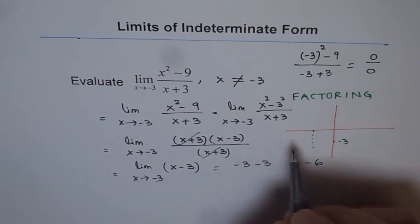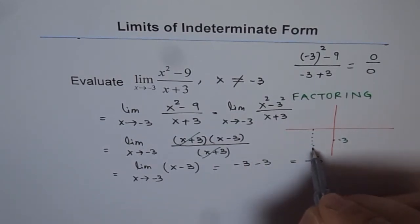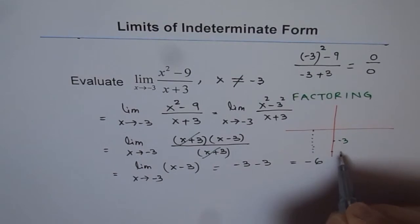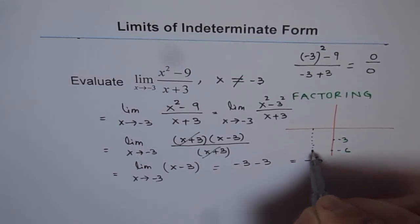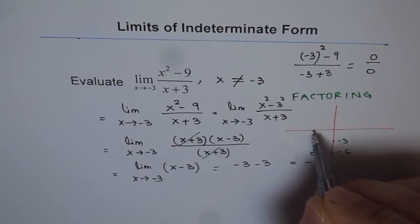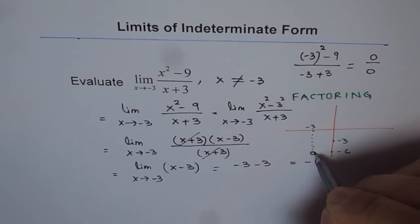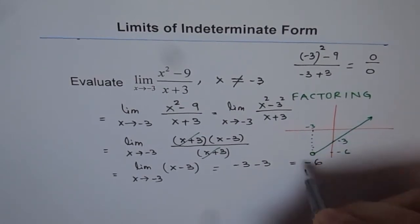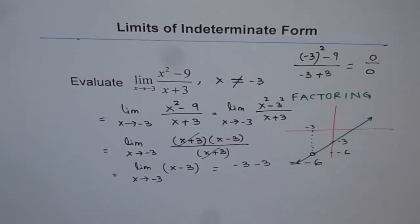So the function is approaching a value of minus 6. Let's say this is minus 6 for us. It is approaching minus 6, but minus 6, that means minus 3, minus 6 is not in the domain of the function. So the function is kind of like this. You see that?